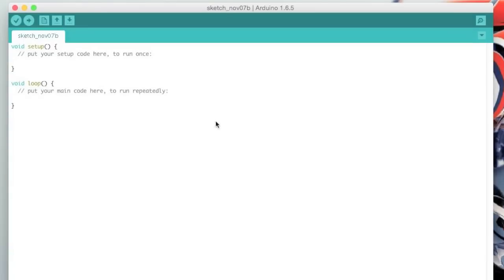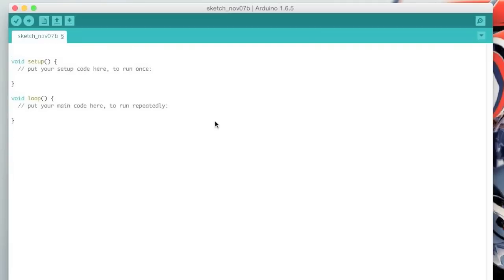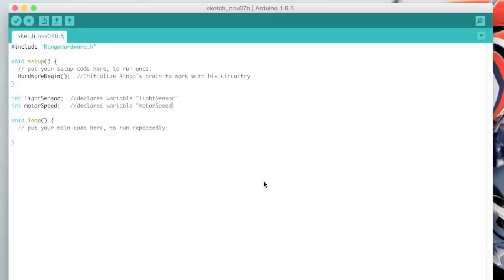When you create a new Arduino sketch, it will start you off with two functions. Setup and Loop. The Setup function will run once when you turn the vehicle on, which is where you'll initialize all of the hardware. The Loop function will then be called continuously, and any code you have in this section will continue to run until you turn the vehicle off. We need to include RingoHardware.h so that we can use all of the functions that Plum Geek wrote to interface with Ringo. To set up the vehicle, I just need to call the Hardware Begin function, and it takes care of initializing all of the circuitry. I will be reading the light sensor and commanding the motors, so I'm going to declare two variables to store these values.